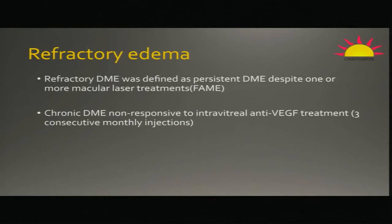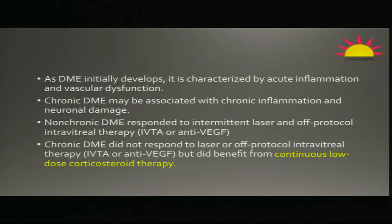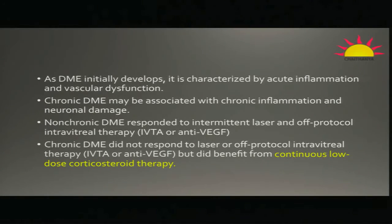Another thing is defining DME. There is an entity called chronic DME, which you define after three injections — sometimes six injections or three months. The opposite of chronic DME is not acute DME, it is non-chronic DME. A non-chronic DME is acute and responds to anti-VEGF. A chronic DME fails to respond over time and the treatment is different. The current concept is that acute forms of DME are anti-VEGF driven, while later in the disease it becomes more anti-inflammatory-mediator driven.